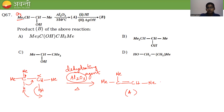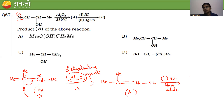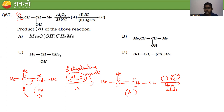Compound A is then treated with HI — this is Markovnikov addition. The negative part (I⁻) goes to the carbon with fewer hydrogens. Carbon 1 has 0 hydrogens, carbon 2 has 1 hydrogen, so I adds to carbon 1 and H adds to carbon 2.